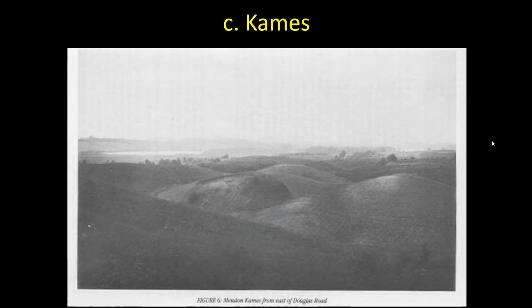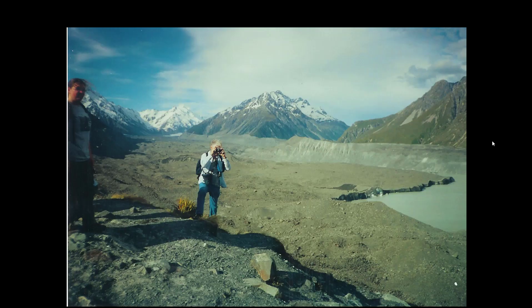Kettles usually occur in groups and they also usually occur with a feature called a kame. Kames are small, sort of circular-shaped hills that can form in a couple of different ways. Sometimes they form when streams flowing down the side of a glacier carry sediment that accumulates in a pile, forming small hills. The glacier eventually melts away but the kame or hill remains. Sometimes kames can actually form from sediment on top of a glacier.